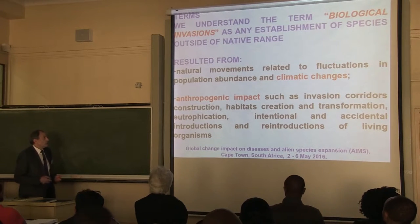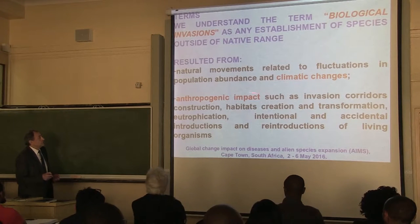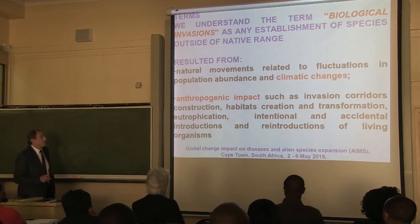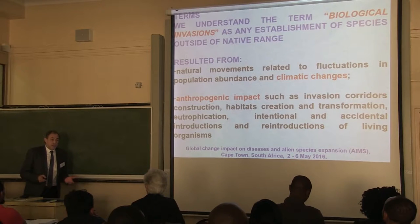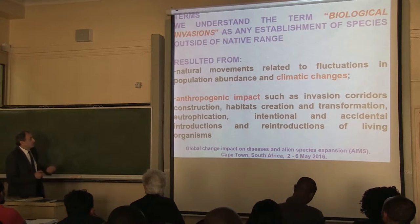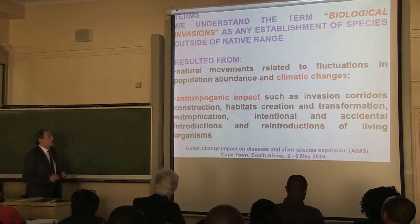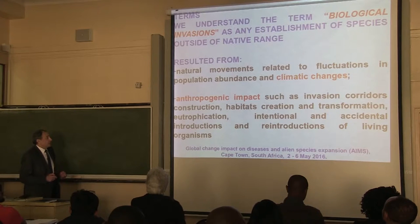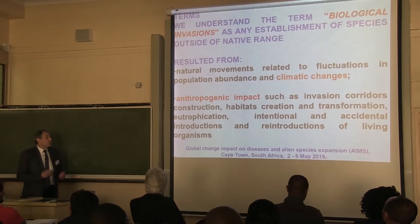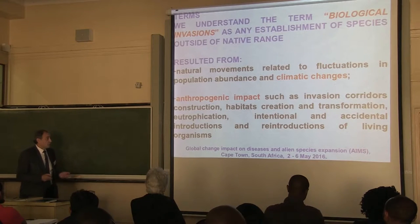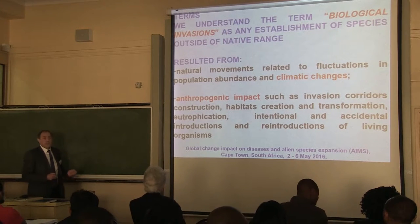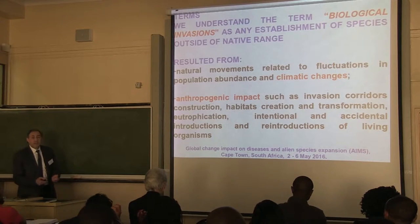It's a natural movement related to infiltration and population abundance, and of course climate changes. Because the subject of this workshop is climate changes, I will try to attract your attention to this point of the distribution and spreading of alien species. And of course anthropogenic impact, such as construction of new invasion corridors, new habitat creation and transformation, eutrophication — I mean additional biological matter to the ecosystem, which means additional food.